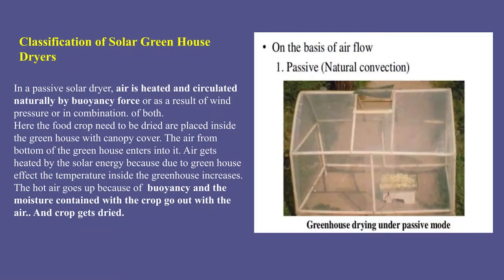In the passive mode, the food crop to be dried is placed inside the greenhouse. The air from the bottom of the greenhouse enters into it and gets heated by solar energy because due to the greenhouse effect the temperature inside increases. The hot air goes up because of buoyancy and the moisture contained in the crop goes out with the air, and the crop gets dried.